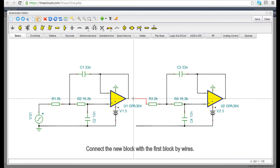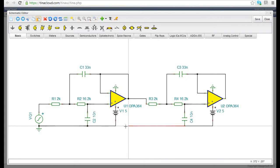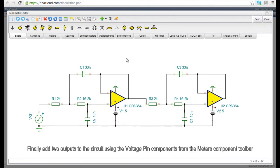Connect the new block with the first block by wires. Finally, add two outputs to the circuit using the voltage pin components from the meters component toolbar.